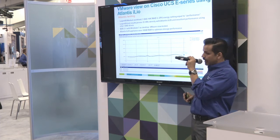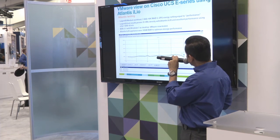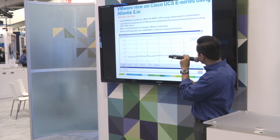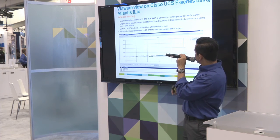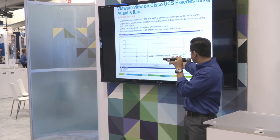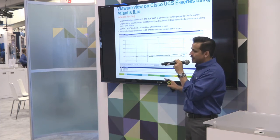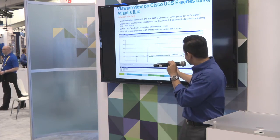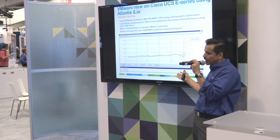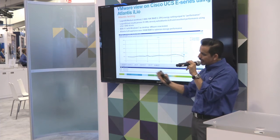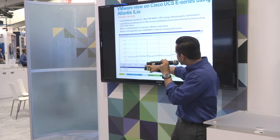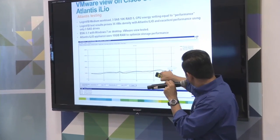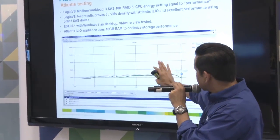Here are the test results that ILIO produced — 35 Windows 7 desktops, 10 gigs of RAM to optimize storage performance. Using LoginVSI, which measures the performance and response of each VM as commands and IOs go through it, the response times are very flat and the baseline was never even reached, confirming excellent performance.